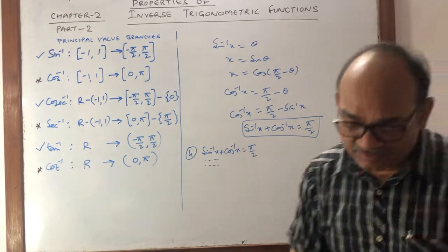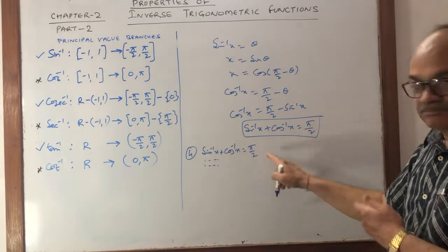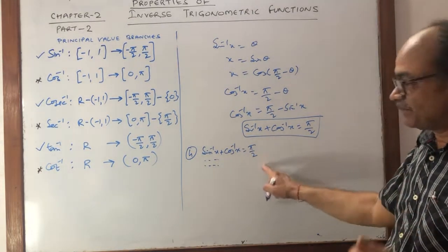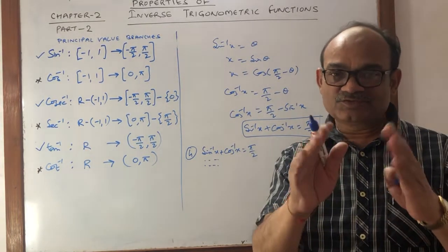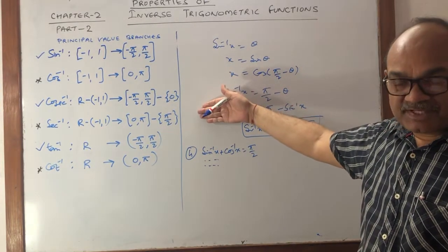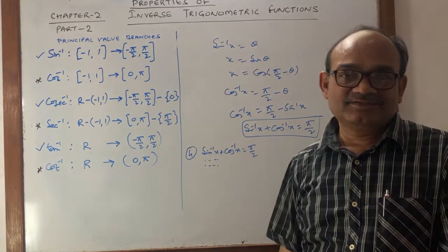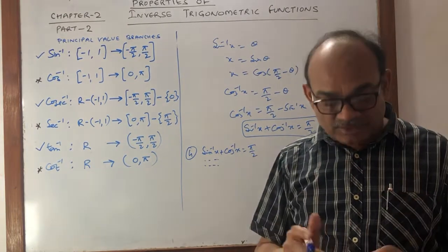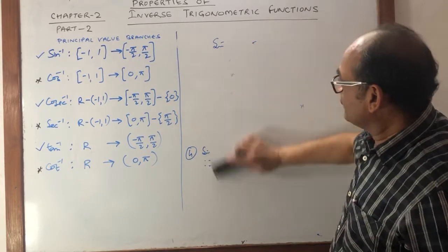Similarly, tan⁻¹(x) + cot⁻¹(x) = π/2, and sec⁻¹(x) + csc⁻¹(x) = π/2. The remaining parts are left as homework: you have to prove the other two pairs in Property 4, the third parts of Property 2, and the third part of Property 1.